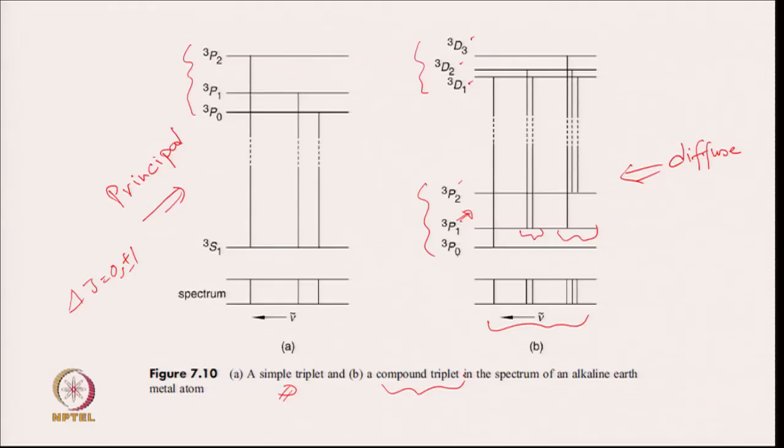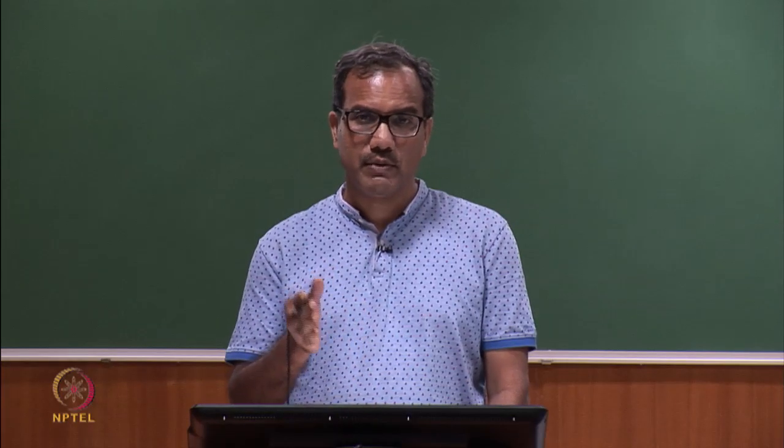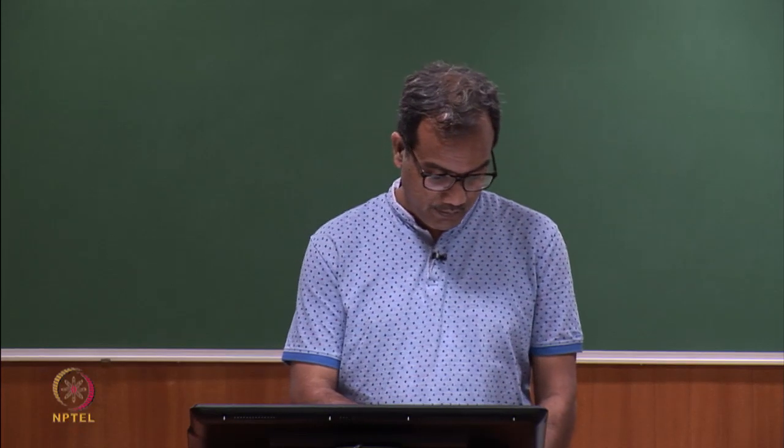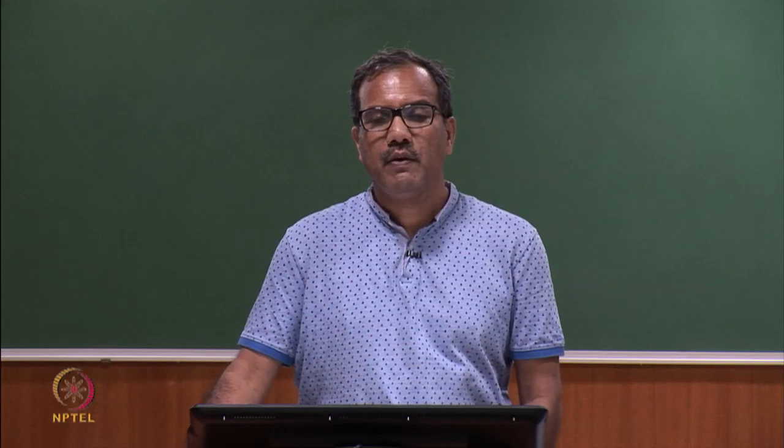The spectrum of alkaline earth metals shows transitions from S² to S¹P¹ or S¹P¹ to S¹D¹. Having discussed atomic spectra, we now move to the techniques based on atomic spectra.